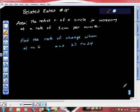This is an area problem. It says the radius R of a circle is increasing at a rate of 3 cm per minute. Find the rate of change when A, R is equal to 6, and B, R is equal to 24.